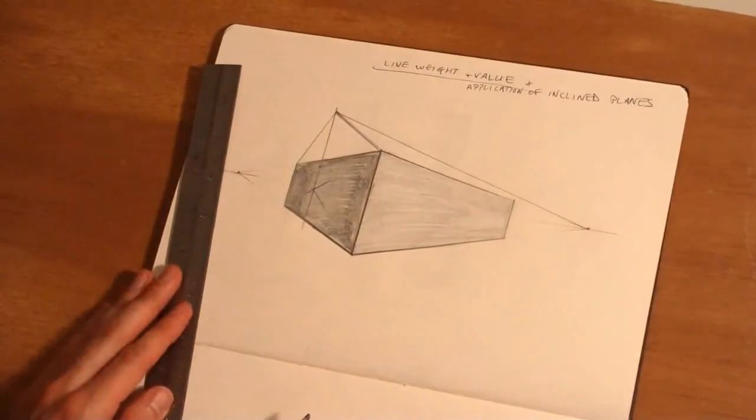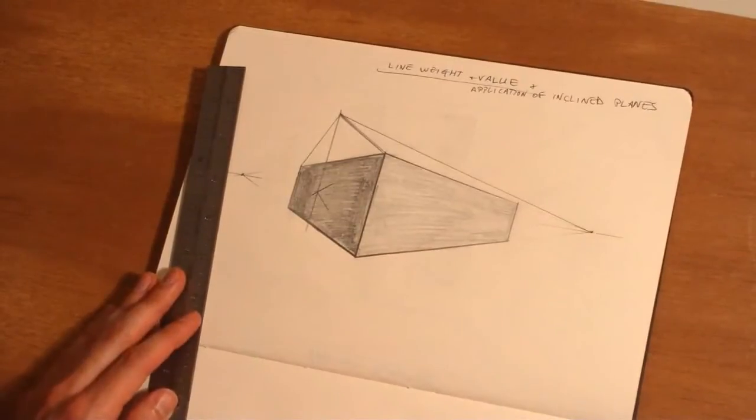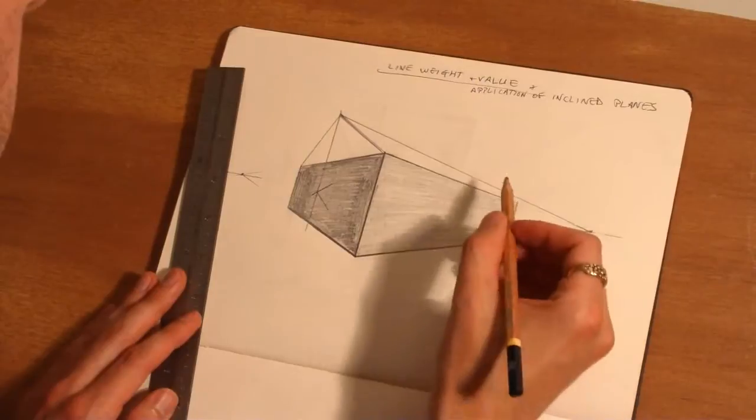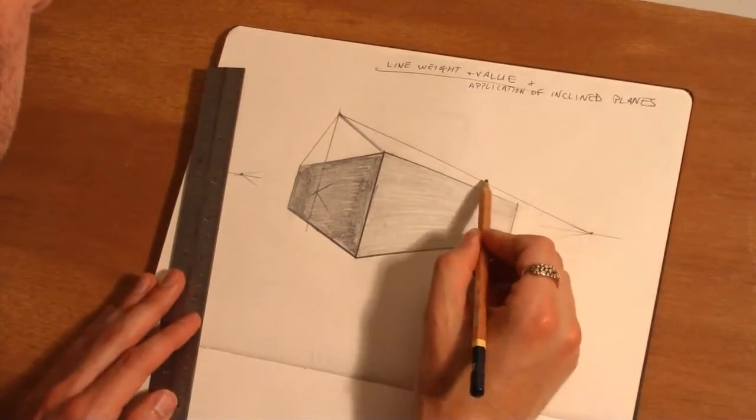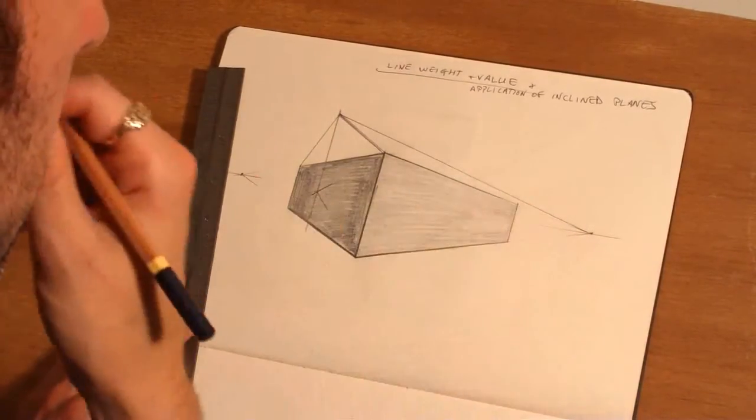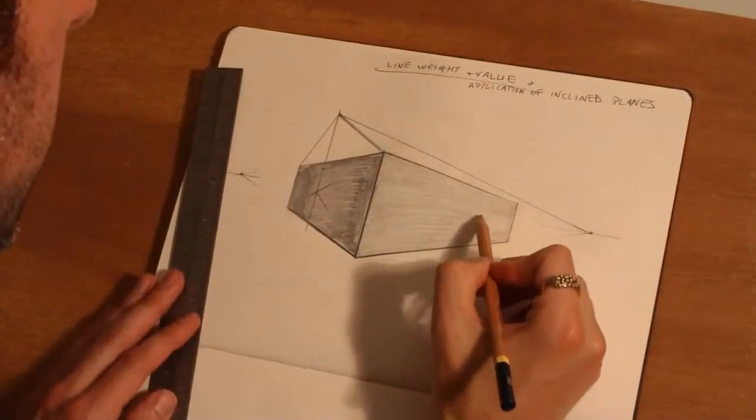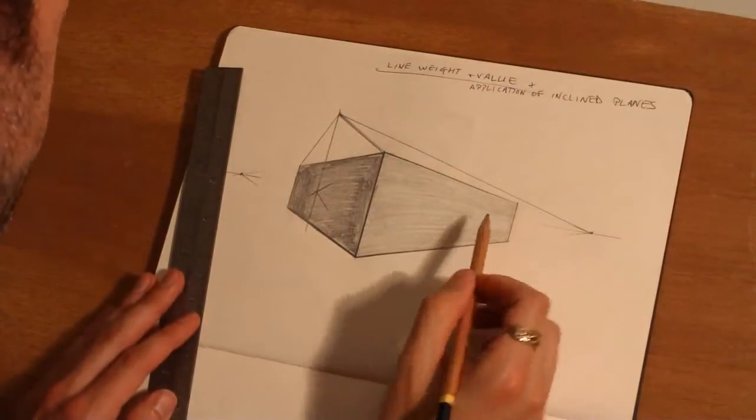Okay so we've got our A-frame pointed out. So what we need to do to locate the way this inclined plane is operating back here. We actually have to draw through the form and find this plane.